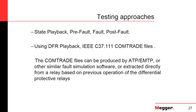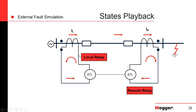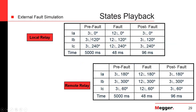The main approaches to end-to-end testing are state playback and DFR playback. With state playback, you determine the voltages and currents at both ends of the line for three different states: the pre-fault state — steady state conditions with no fault; the fault state — the moment a fault hits the system; and the post-fault state — what happens after the fault is cleared by the protection system.